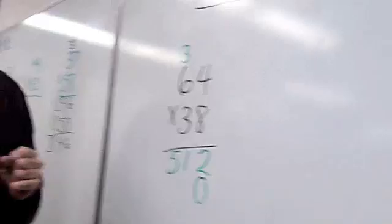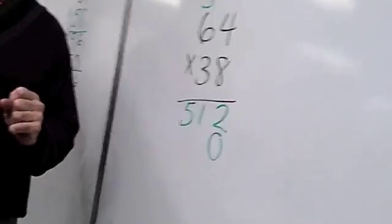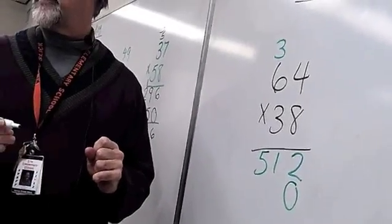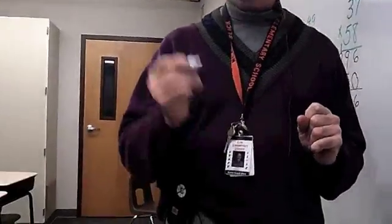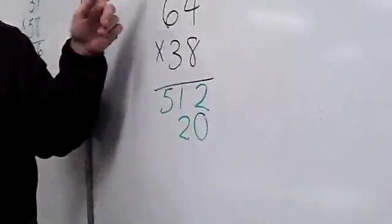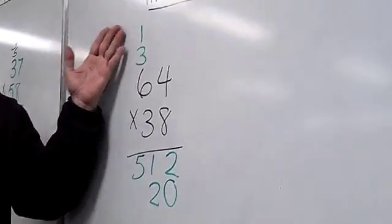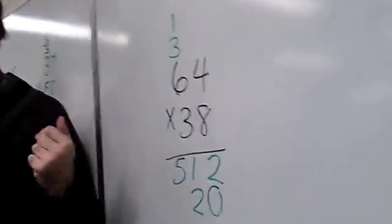3 times 4. Think of it as 3 times 4, yeah, which is? 12. Right, so we do the 2 and regroup the 1. And I'm just going to sort of put it up on top of this other one we've already regrouped to keep track of where we are.